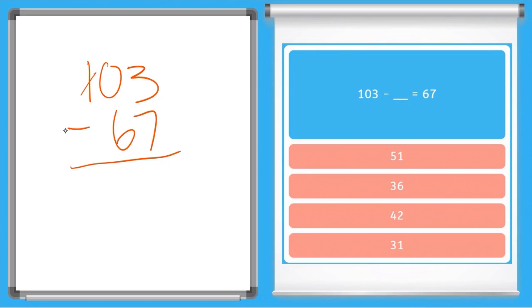So we'll have zero hundreds, which makes 10 tens. Now we can borrow from the tens place. So we have nine tens. That makes this 3 a 13. So 13 minus 7 is 6. 9 minus 6 is 3. 0 minus 0 is nothing. So we have nothing in the hundreds place. Our answer is 36. 103 minus 36 equals 67.